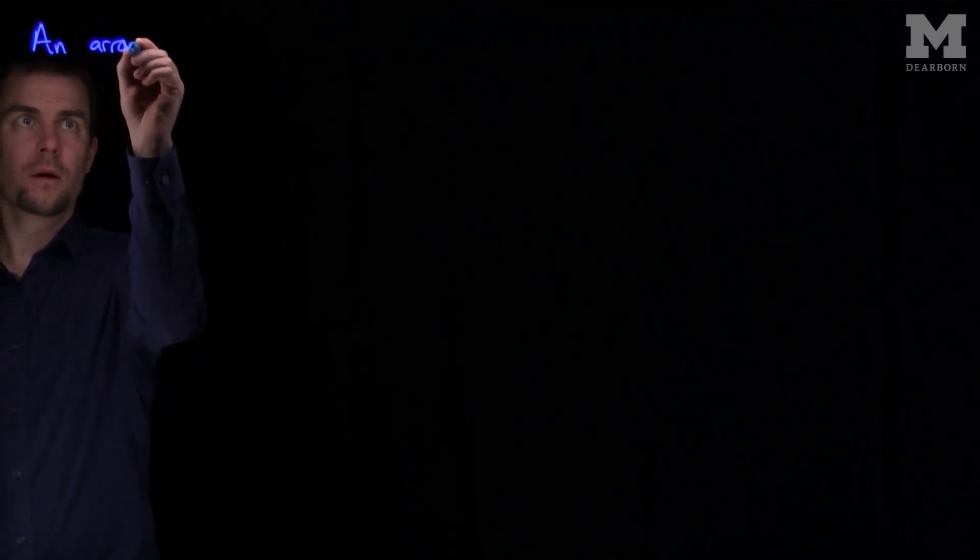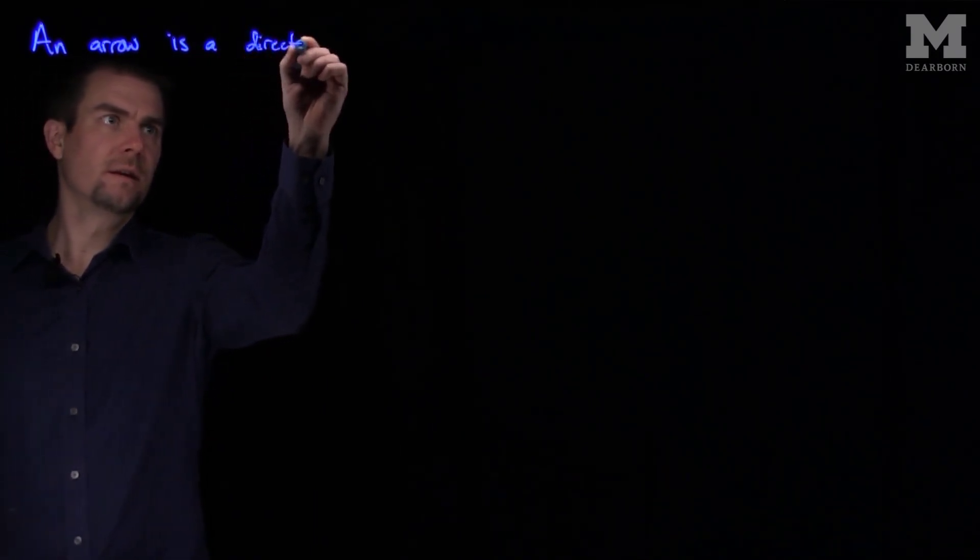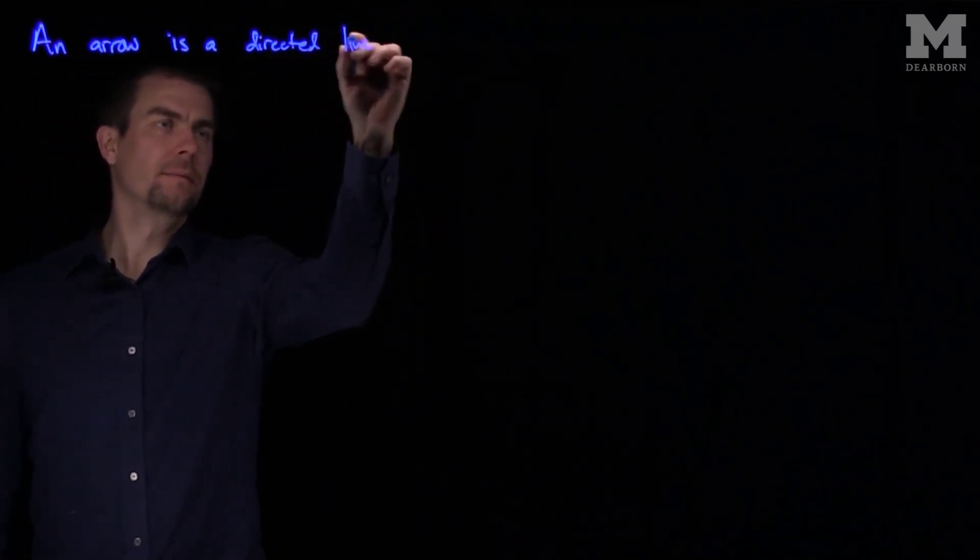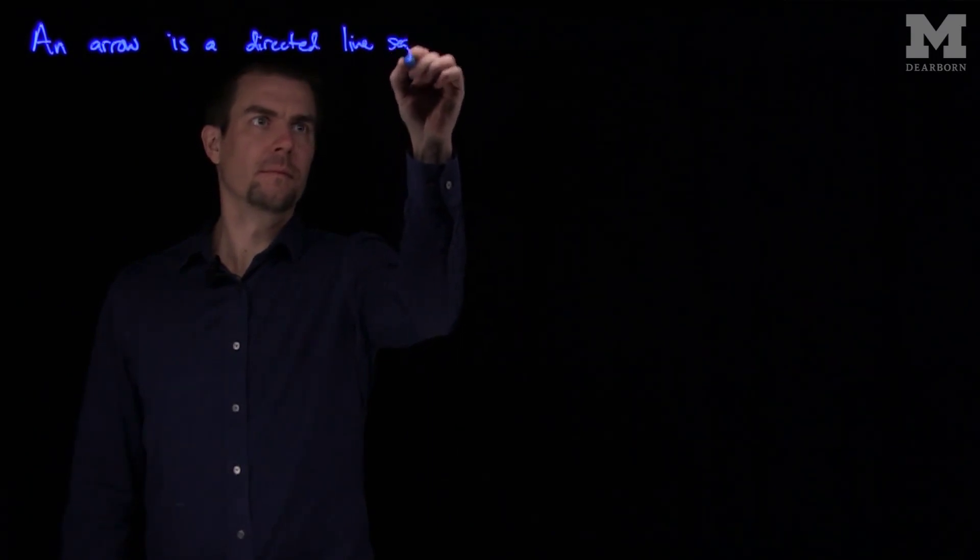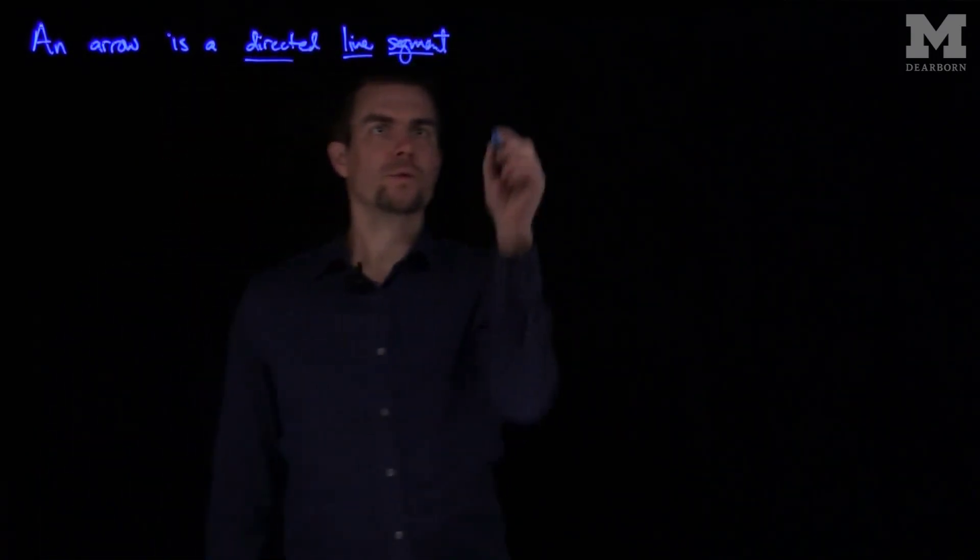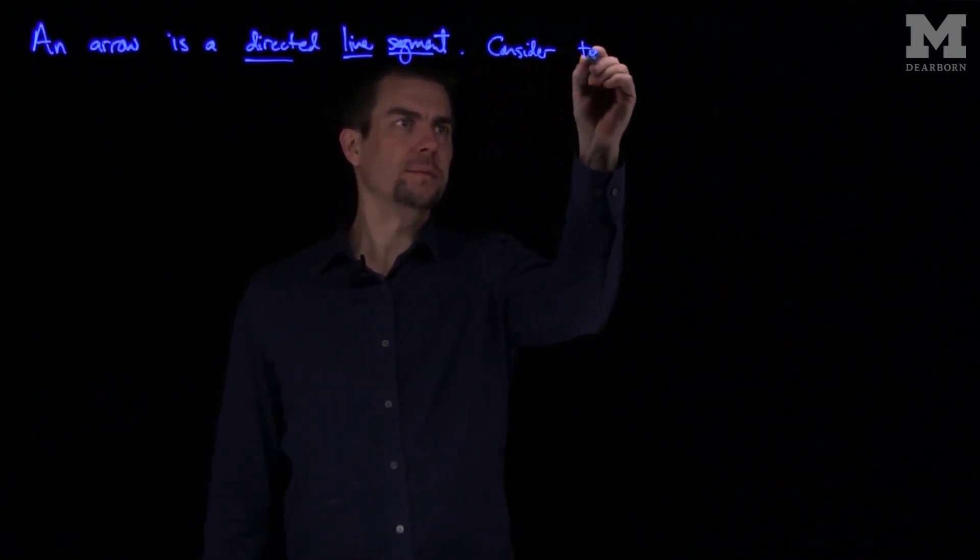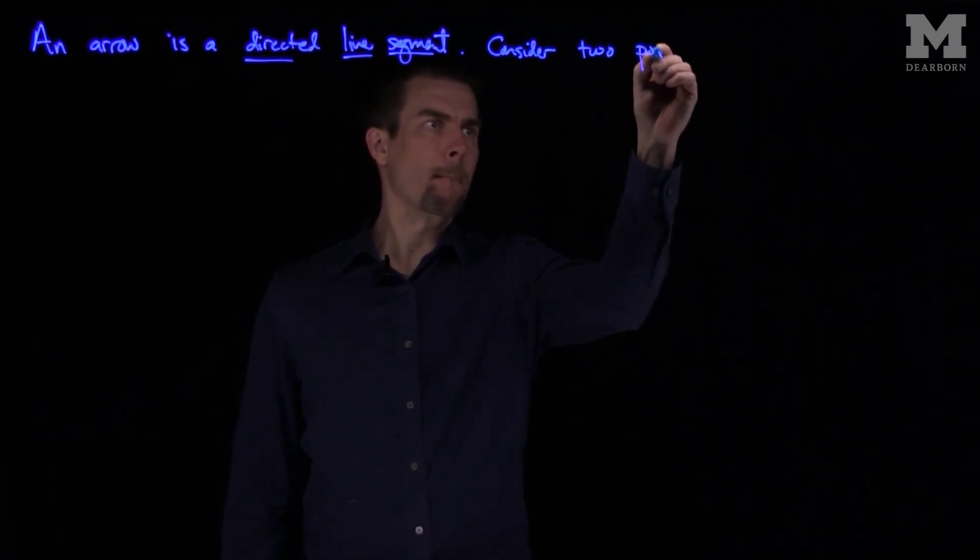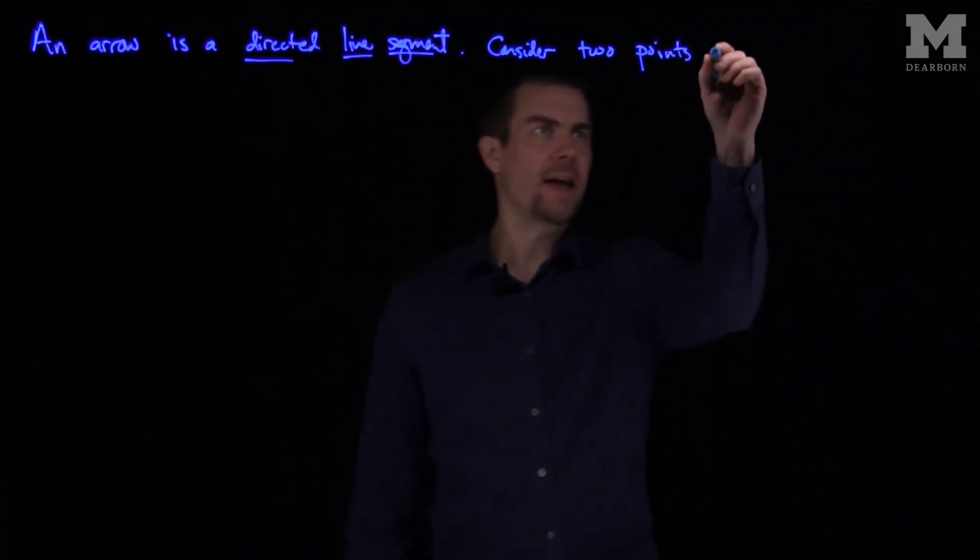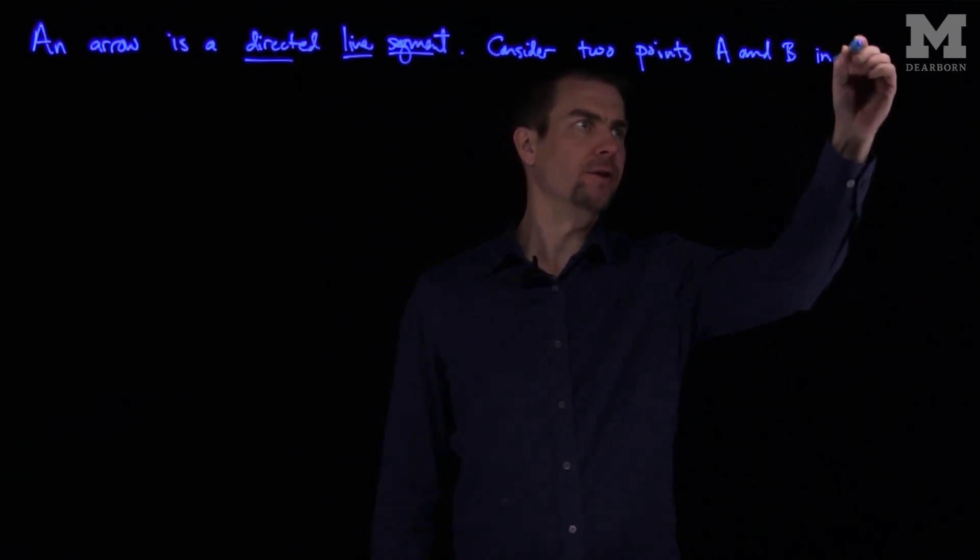An arrow is a directed line segment. So what we'll do is consider two points A and B in three-dimensional space.